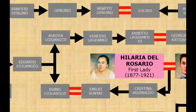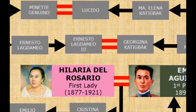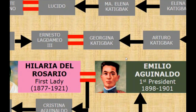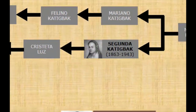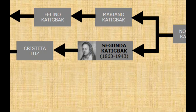A sister of Isabel, Aurora, was married to Ernesto Lagdameo Sr., and whose grandson Ernesto Lagdameo III would marry Georgina Katigbak. Georgina Katigbak, on the other hand, was a great-granddaughter of Segunda Katigbak. Segunda Katigbak has a very interesting role in Philippine history — she is known as the first love of the national hero of the Philippines, Jose Rizal. Jose Rizal was only 16 years old when he first fell in love with Segunda. Unfortunately for him, Segunda was already spoken for and would later marry Don Manuel Luz, another prominent family from Lipa, Batangas, where the Katigbaks were also one of the most prominent families.